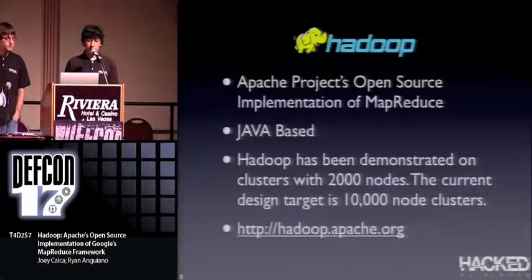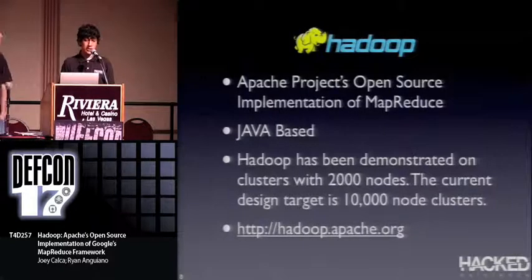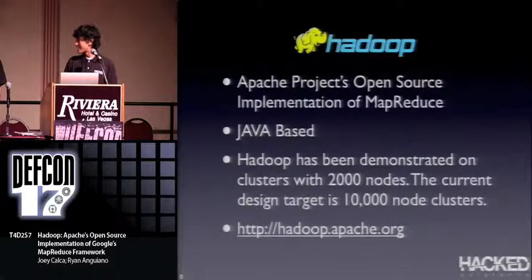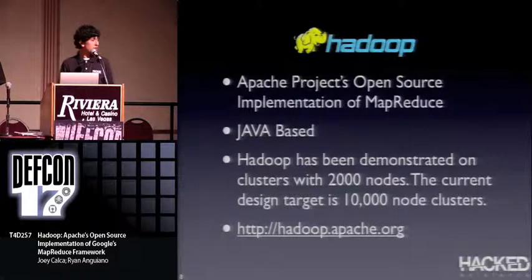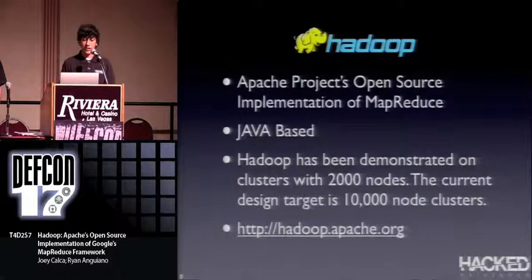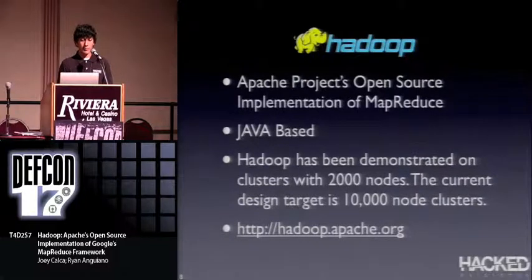Hadoop is Apache's open source implementation of MapReduce. It's Java-based, and right now it's at version 0.20 — not fully stable yet. Our cluster runs 0.19. It's been demonstrated on a cluster with 2,000 nodes, and for production they're aiming for 10,000-node clusters. You can find more information on their website.